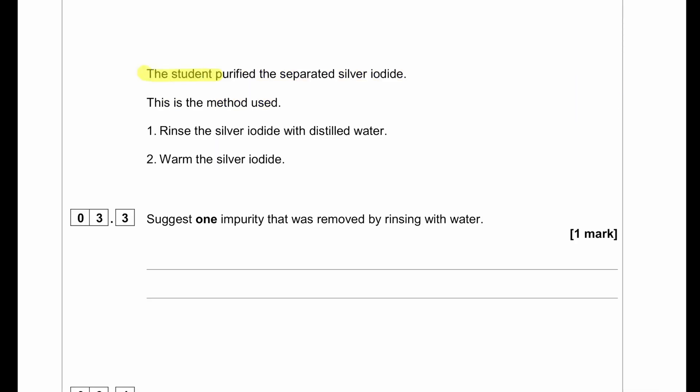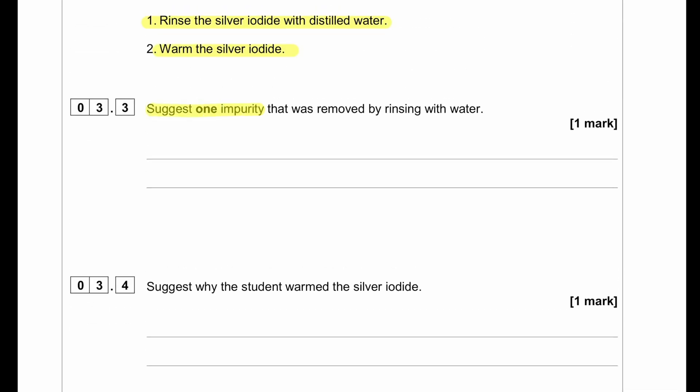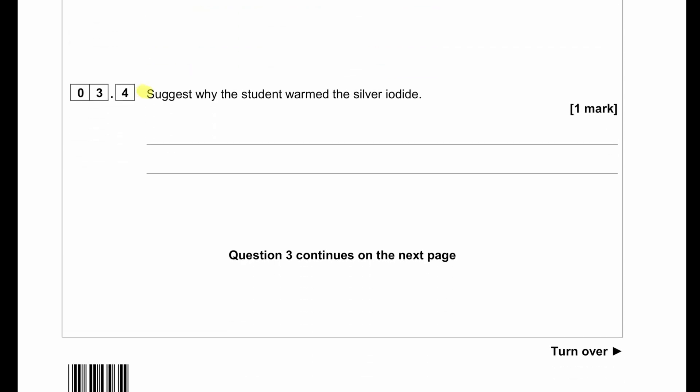The student purified the separated silver iodide. The student used this method: rinse the silver iodide with distilled water, warm the silver iodide. Suggest one impurity that was removed by rinsing with water. When we rinsed it with water, we removed the sodium nitrate solution that was sticking with the silver iodide. Suggest why the student warmed the silver iodide. The student warmed the silver iodide to remove any residual water.